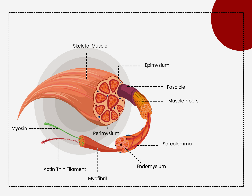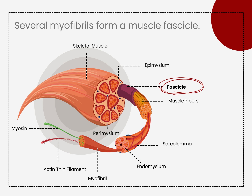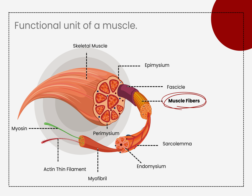Each muscle is surrounded by a connective tissue sheath called the epimyceum. Fascia, connective tissue outside the epimyceum, surrounds and separates the muscles. Portions of the epimyceum project inward to divide the muscle into compartments. Each compartment contains bundles of muscle fibers.